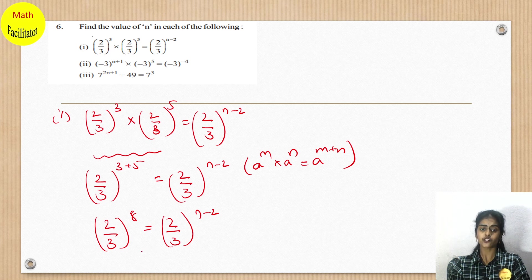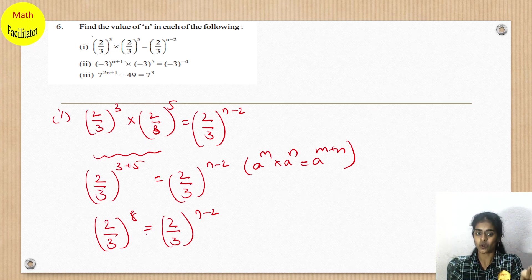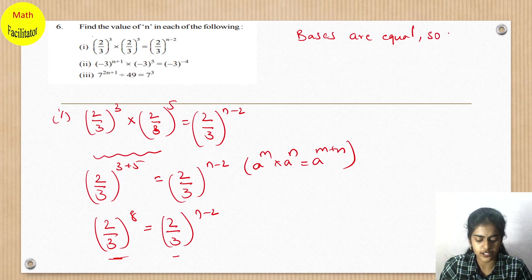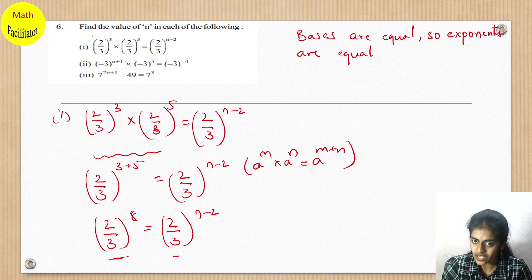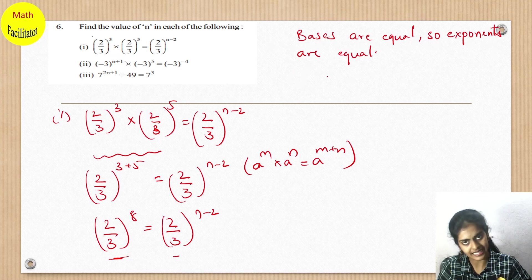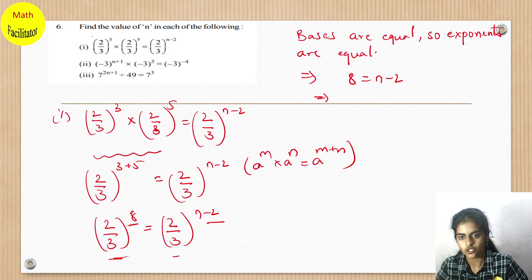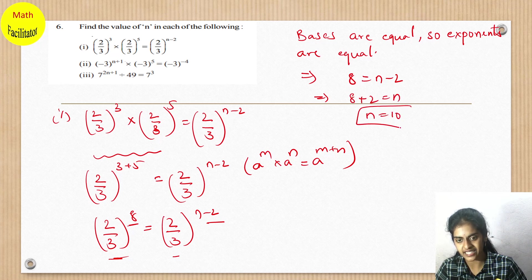So (2/3)^8 equals (2/3)^(n-2). Here the bases are equal — 2/3 and 2/3. When bases are equal, we can equate the exponents. So 8 equals n minus 2. Transposing the -2 to the LHS gives 8 + 2 = n. So n equals 10 is the final answer.